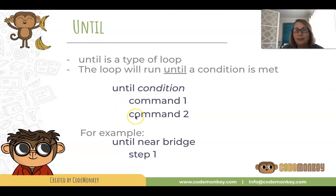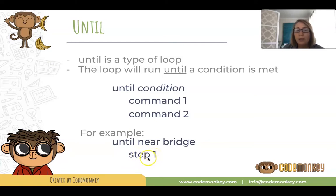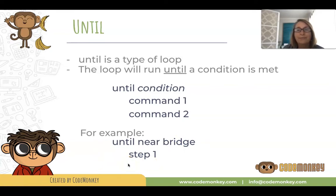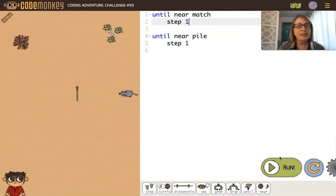Here's an example: 'until near bridge' — 'near bridge' is the condition. So basically, I want to step until I'm near the bridge. As soon as I'm near the bridge, I'll stop looping and go to the next command outside of the loop.